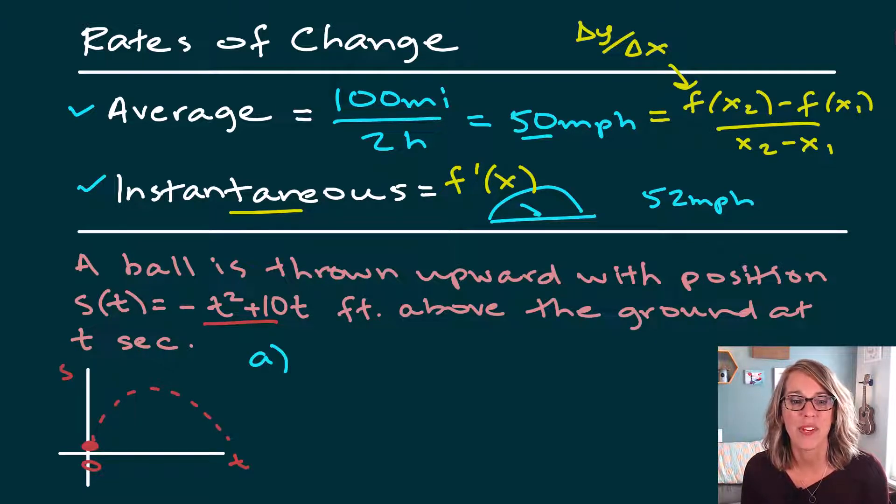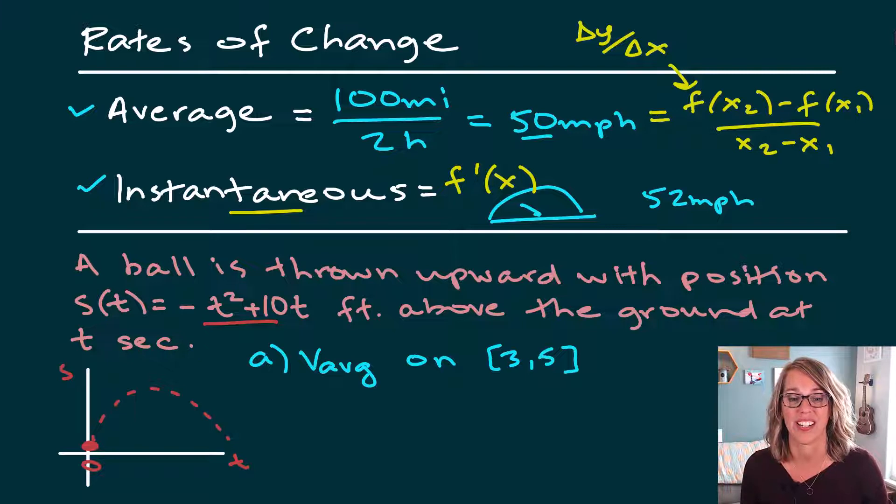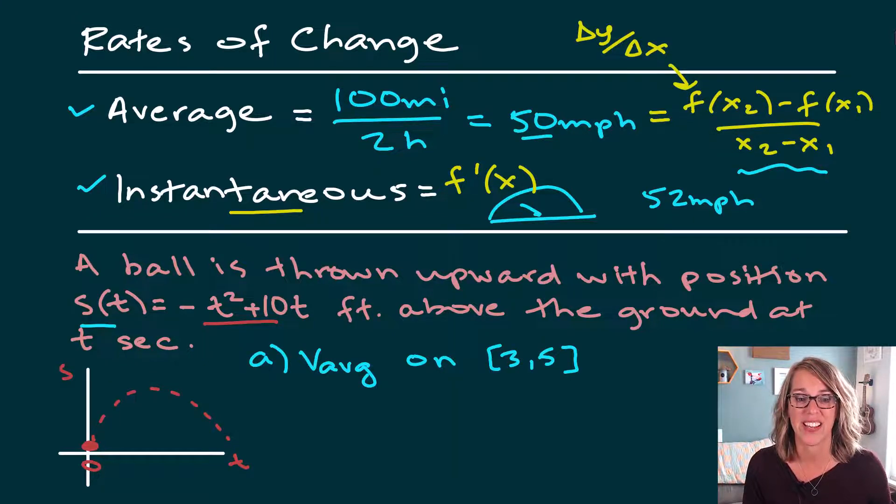So first, we want to find the average velocity. Velocity is speed. The average velocity on the time interval, let's do three to five. So three to five seconds. This is feet per second. Well, to find the average velocity, I need to use the formula that I have up here. My function is s of t. So my average velocity is going to be given by s of five minus s of three divided by five minus three.